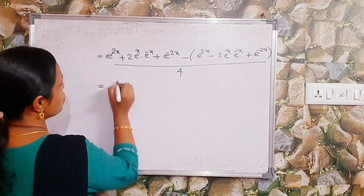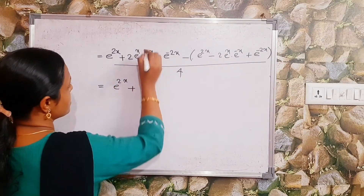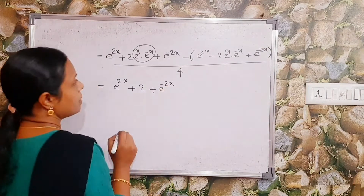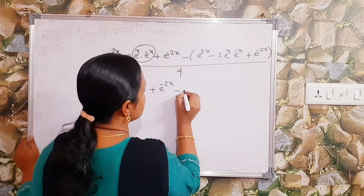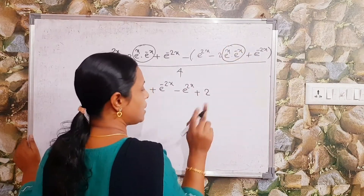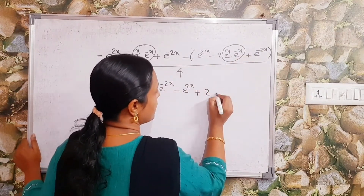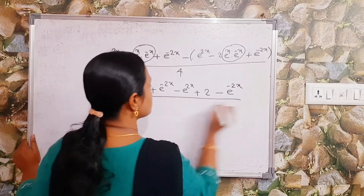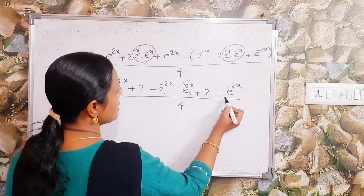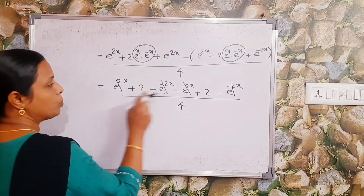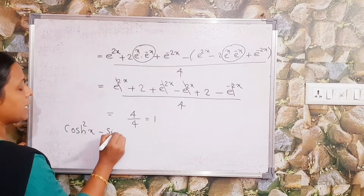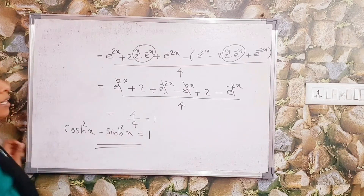This equals e^(2x) + 2 + e^(-2x) - e^(2x) + 2 - e^(-2x), all divided by 4. Since e^x · e^(-x) = e^0 = 1, the e^(2x) and e^(-2x) terms cancel, giving 2 + 2 = 4, divided by 4, which equals 1. Therefore, cosh²x - sinh²x = 1.